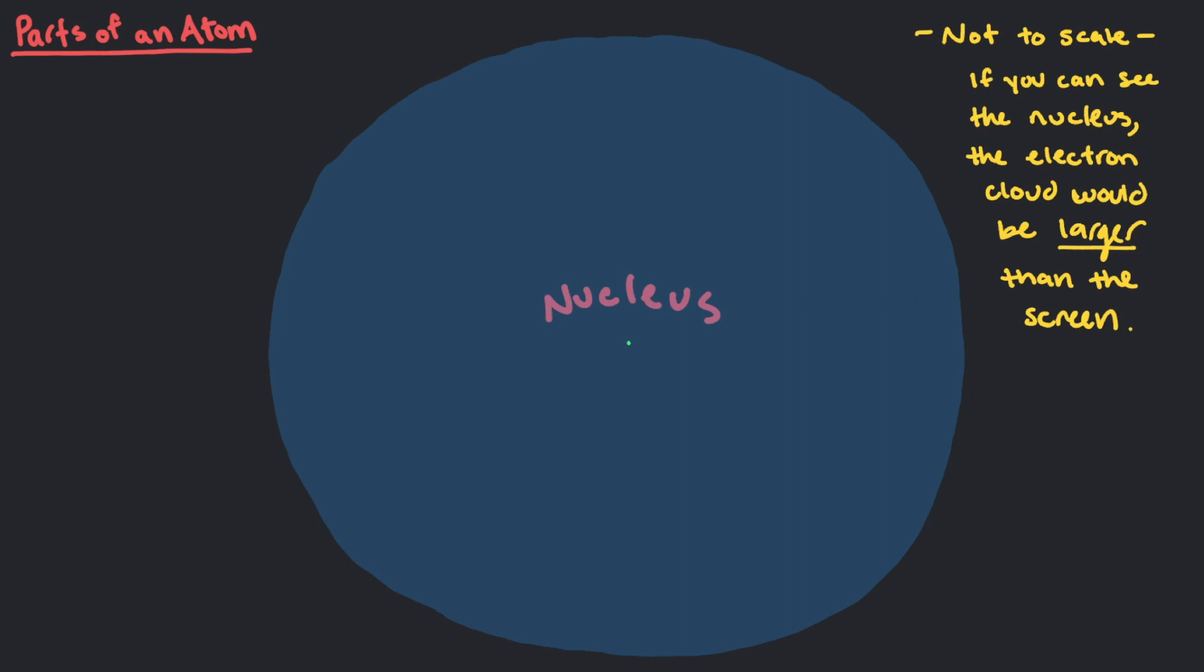For a typical atom, the nucleus will have a diameter of about 10 to the negative 15 meters, whereas the whole atom would have a diameter of about 10 to the negative 10 meters. That means that the diameter of the nucleus is about 100,000 times smaller than that of the atom.